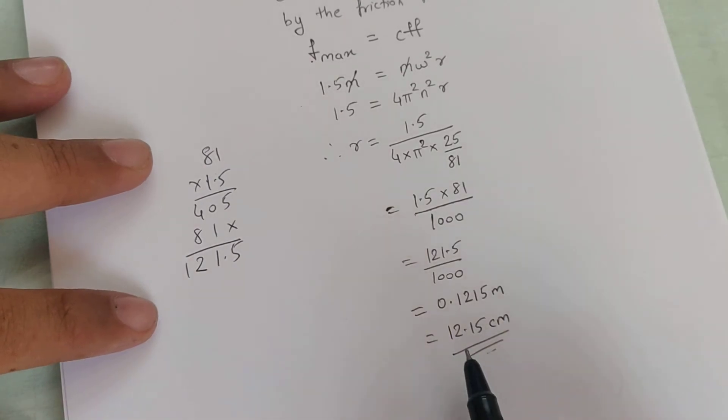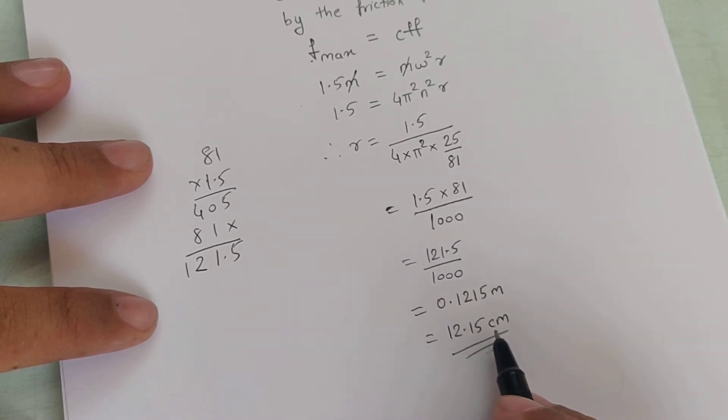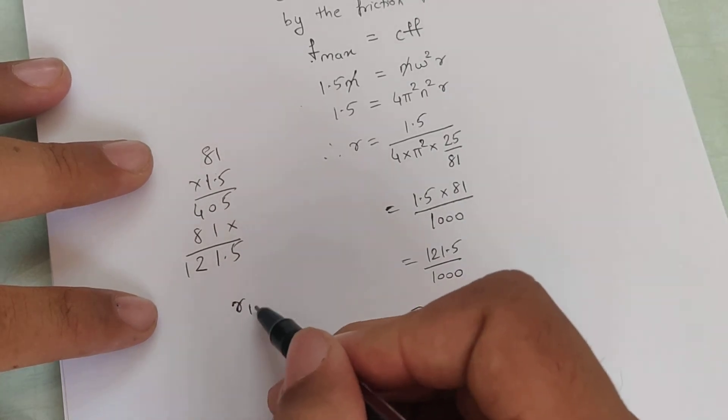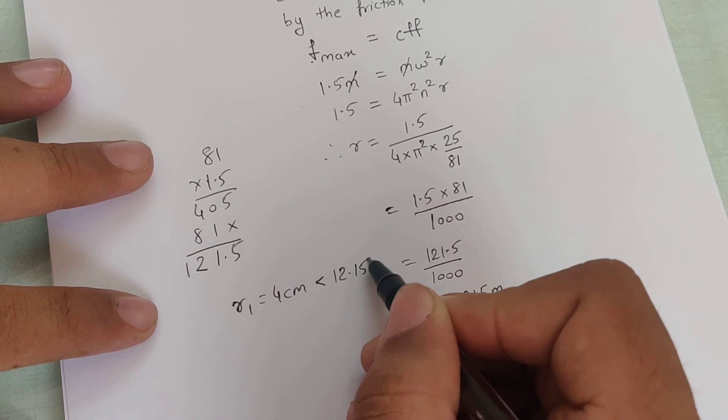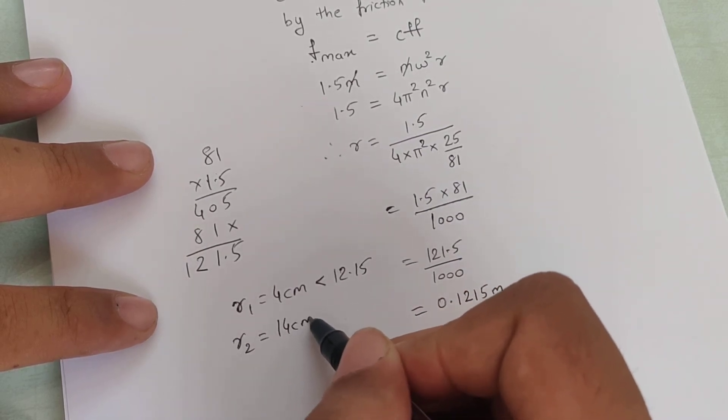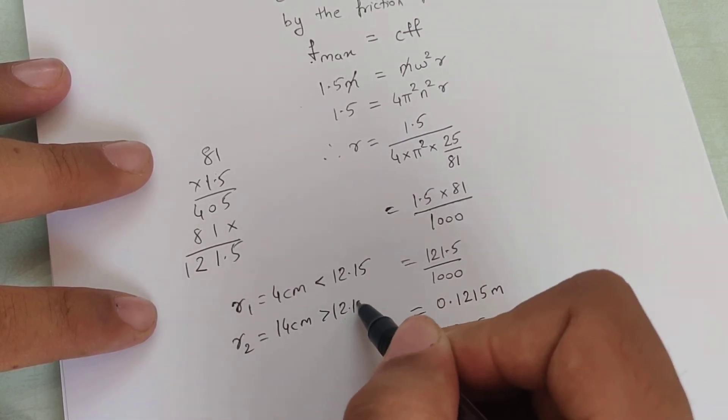That means the maximum radius up to which the coin will revolve with the disc or with the record is 12.15 centimeter. Now we know r1 was 4 centimeter which is less than 12.15 and r2 is 14 centimeter which is greater than 12.15.